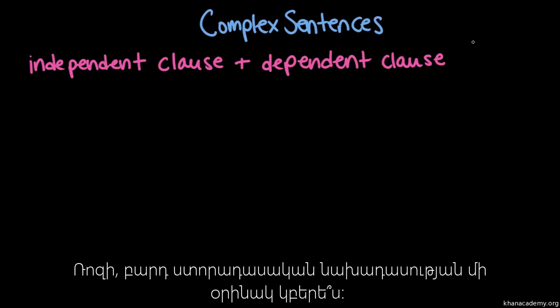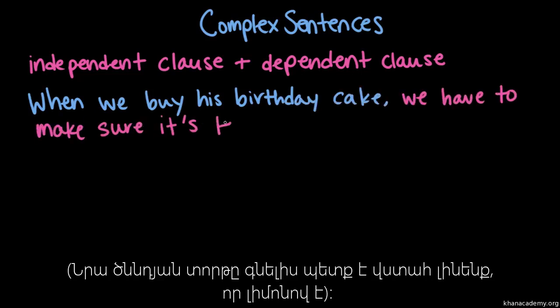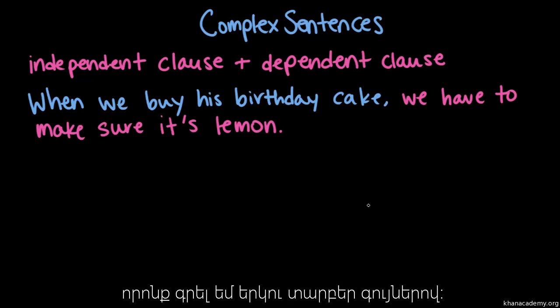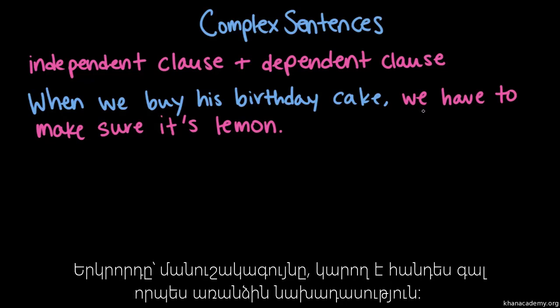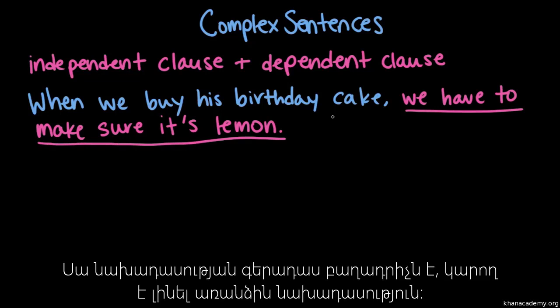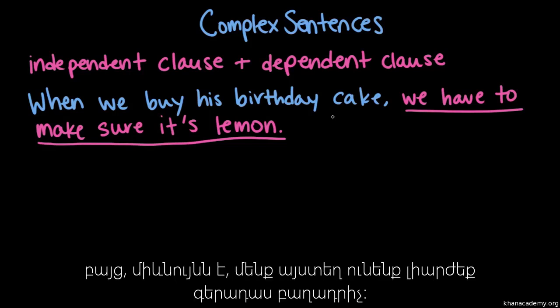So Rosie, what's an example of a complex sentence? When we buy his birthday cake, we have to make sure it's lemon. So this sentence is made up of two clauses, and I've written them in different colors here. The second one, the pink one, can stand on its own as a sentence — we could just say 'we have to make sure it's lemon.' It works, it functions as an independent clause. We have some information that might be missing since we don't necessarily know what 'it's' refers to, but we do have all the components of an independent clause here.